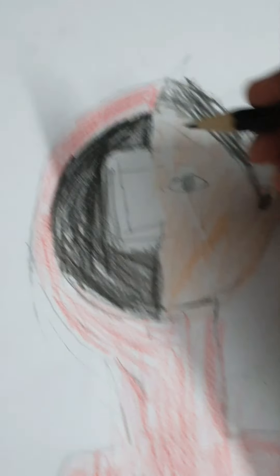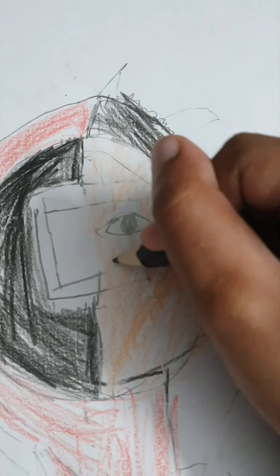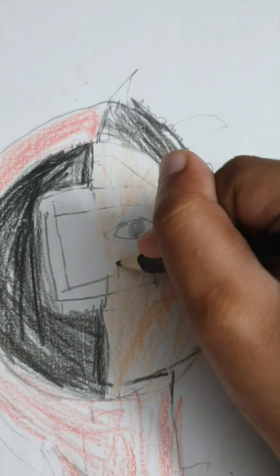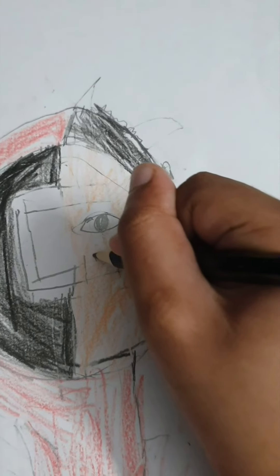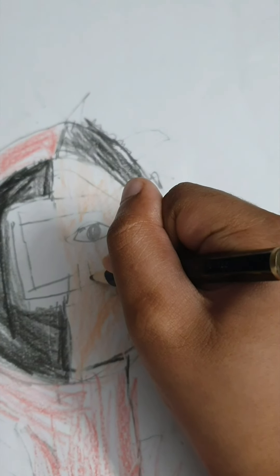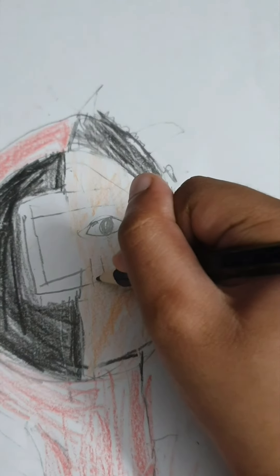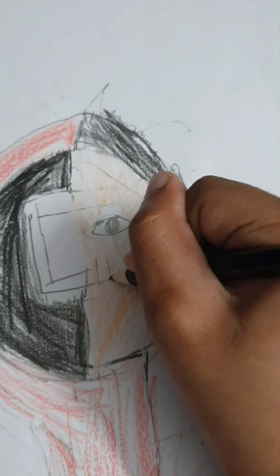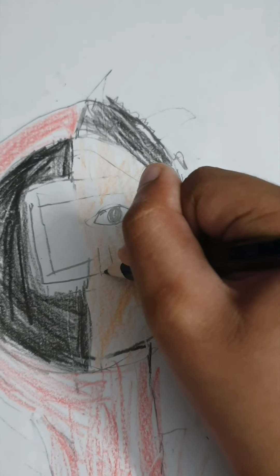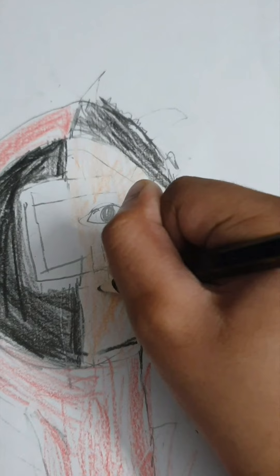Then we need to just draw the nodes. So first we need to draw this learning line, it's just a company for it. And there we go.